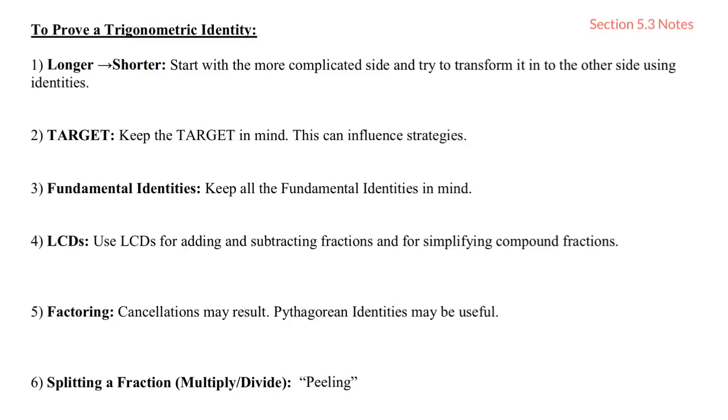I'm going to start off by giving you a list of 7, 8, maybe 9 strategies to use whenever you are trying to prove a trig identity. The first strategy is that you always want to start with the longer or more complicated side and try to work your way to the shorter or less complicated side. Most of the time that's going to mean we're going to start on the left-hand side and try to transform that using identities and algebraic techniques to look like the right-hand side.